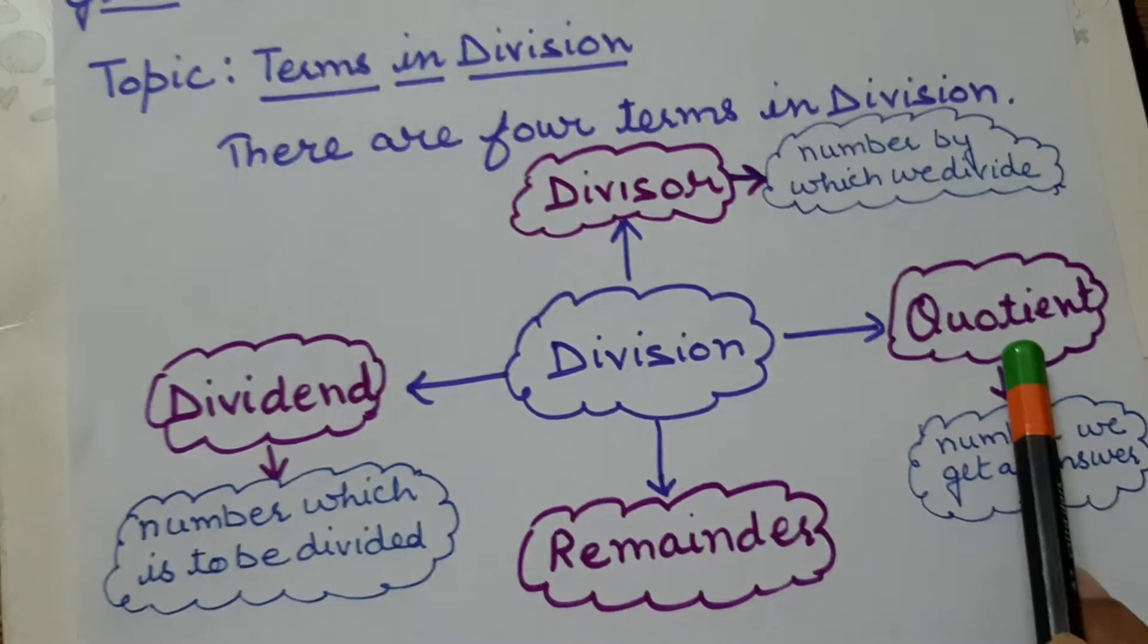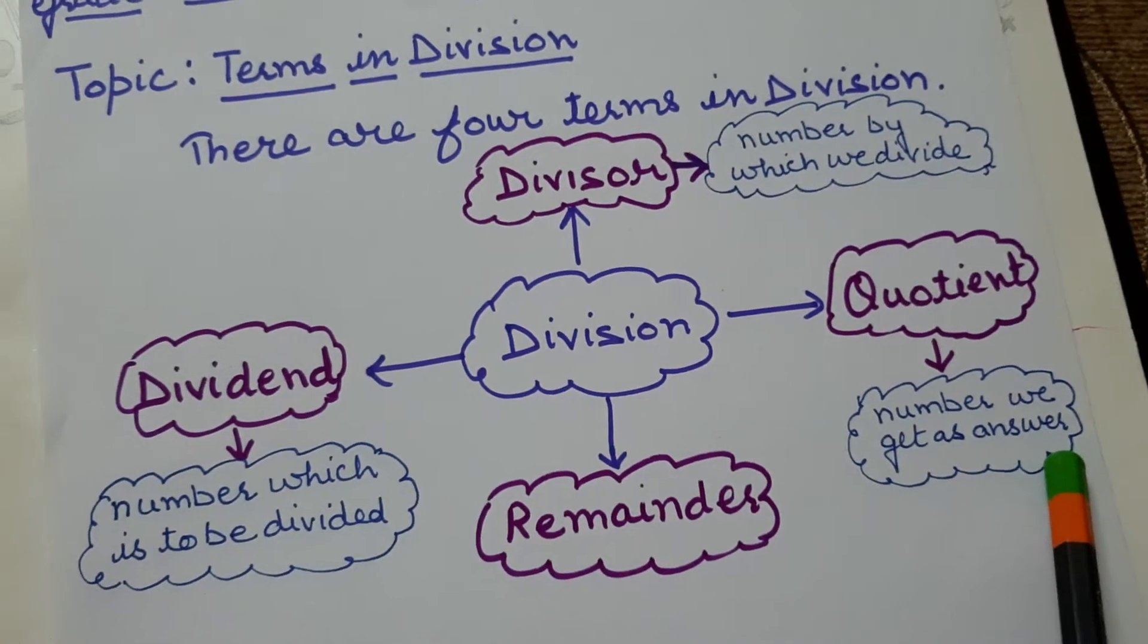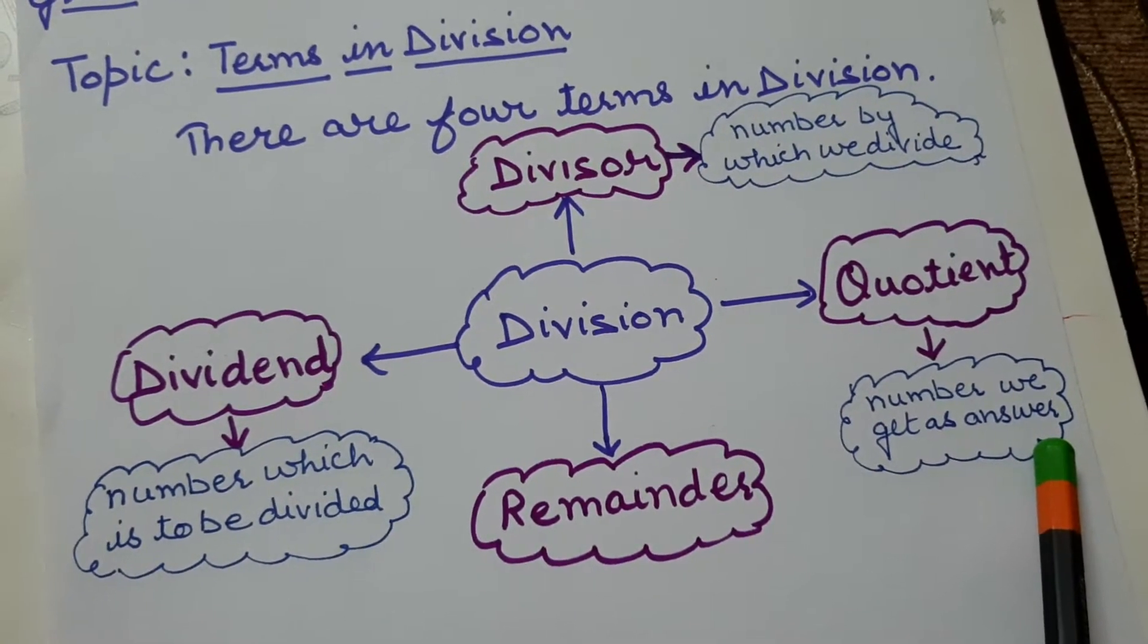Next is quotient. Quotient is the number we get as answer.